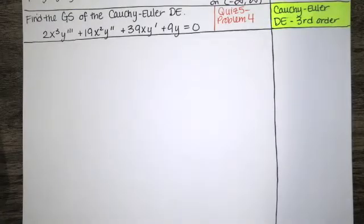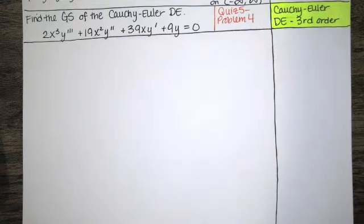In this video we solve problem number four from quiz number five from the fall 2020 semester. In this problem we're asked to find the general solution of a Cauchy-Euler differential equation.